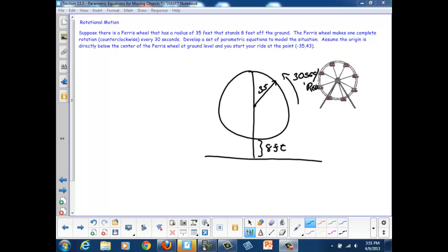Now we're starting at the point. The center here is at the radius plus the distance off the ground. So negative 35, 43 will put us right here at the left edge of our Ferris wheel.